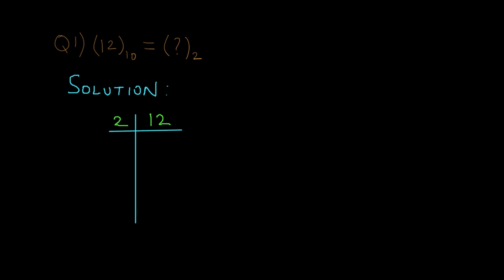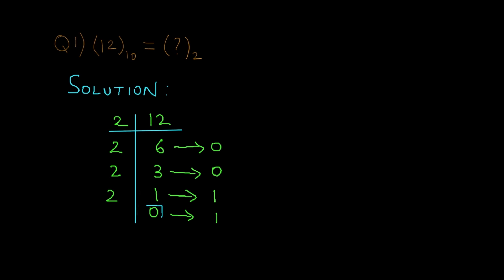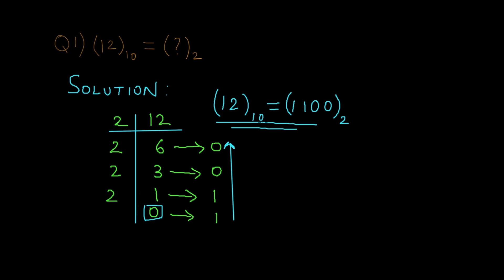For the first iteration: 2 × 6 = 12, giving a remainder of 0. For the second iteration: 2 × 3 = 6, again a remainder of 0. For the third iteration: 2 × 1 = 2, giving a remainder of 1. Since we got 0 as the quotient we stop, and we write the answer from the remainders in descending order.